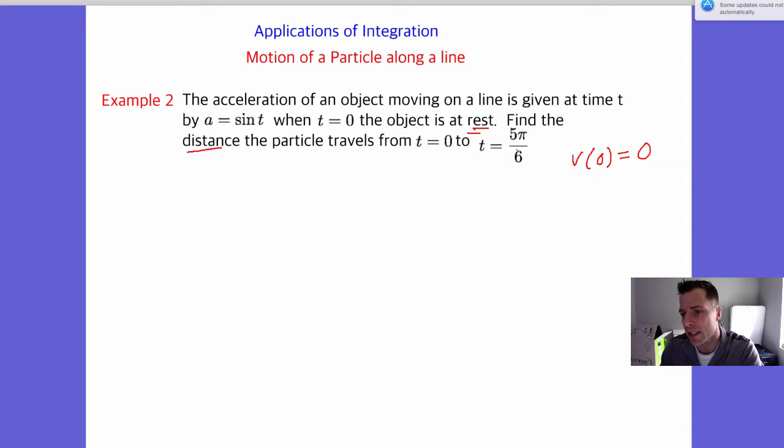Now, the big thing we have here is the acceleration function. I don't have v(t). But if I integrate acceleration, I get velocity. So I need to take the integral of acceleration, which is going to be the integral of sine of t dt. And that's easy enough to integrate. We're going to get negative cosine of t plus c. Now, I don't have c. If I wanted the total distance, I have to find c.